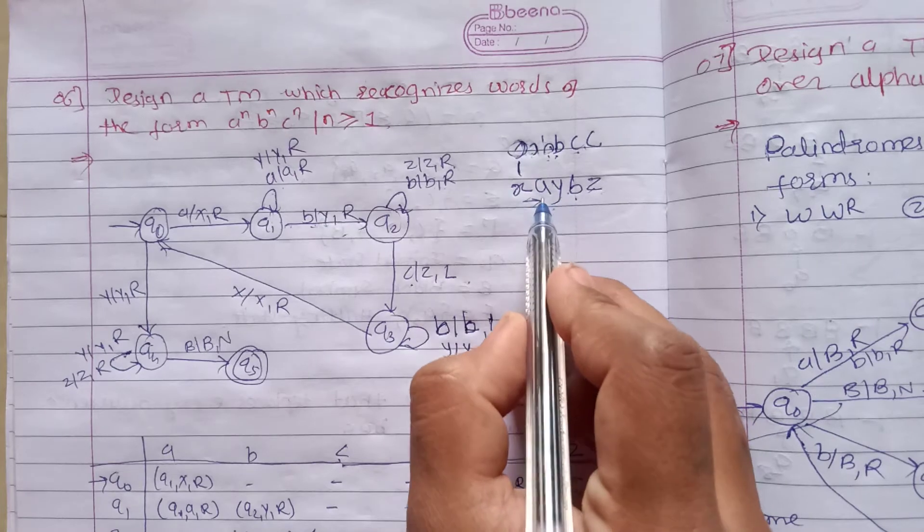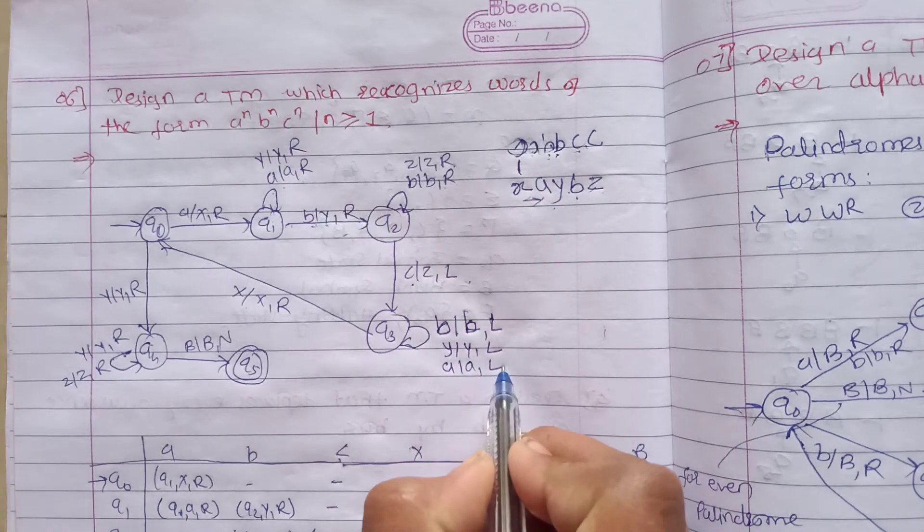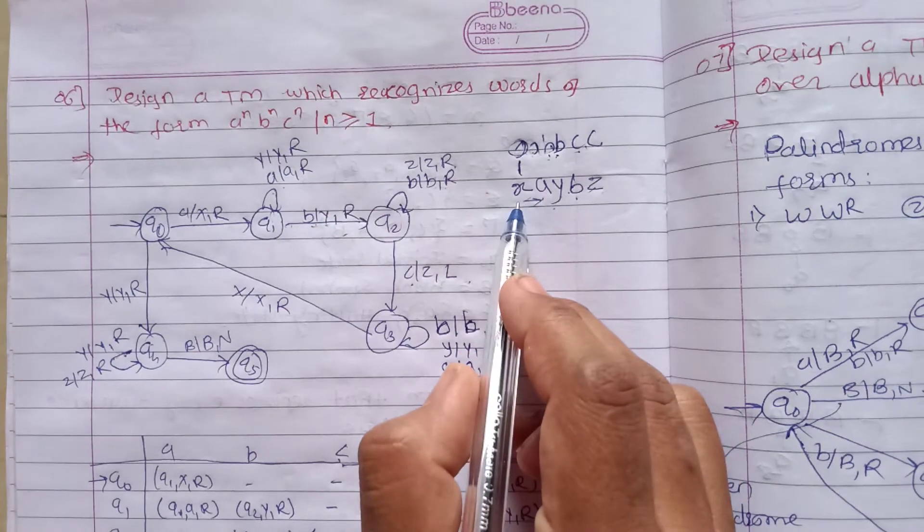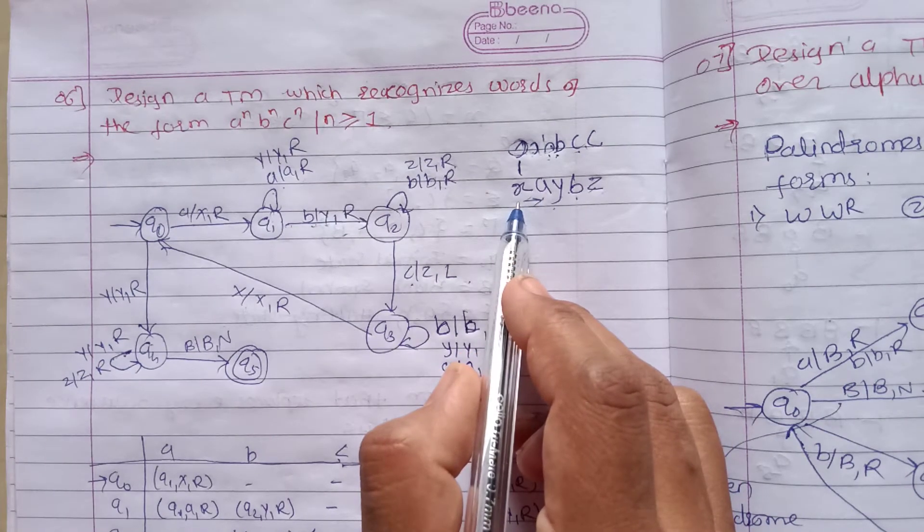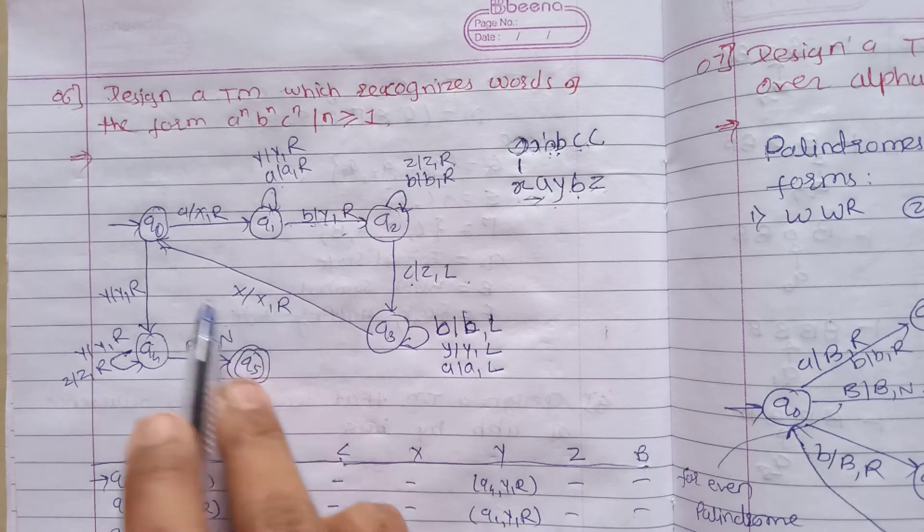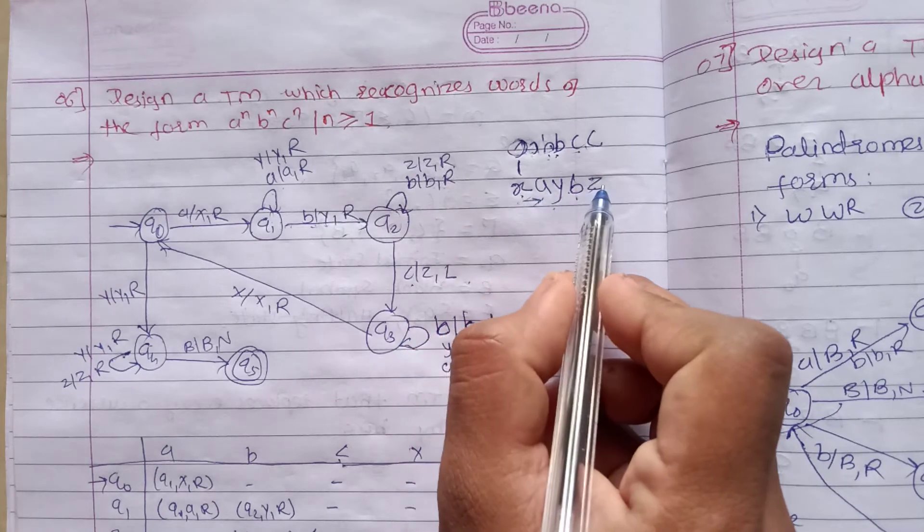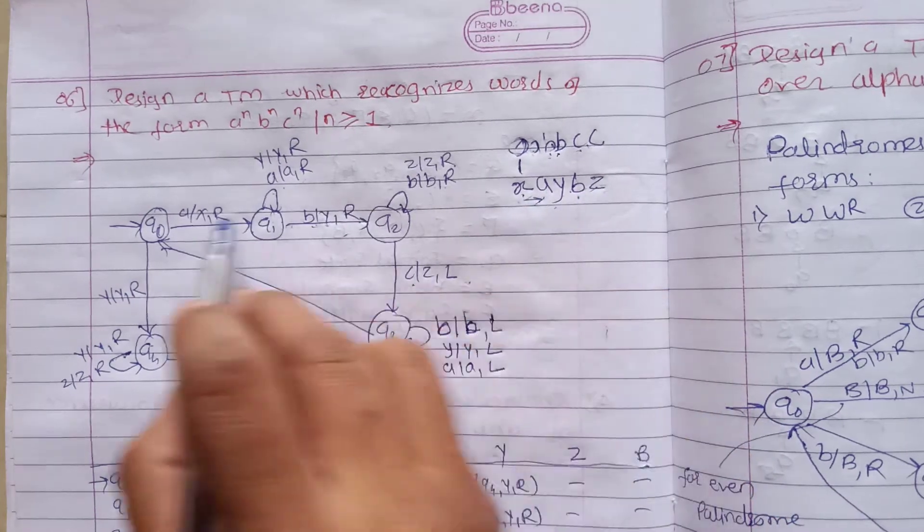Then we get a, so a will be replaced with a, movement left. After that we get x. As soon as we get x, x will be replaced with x, movement right. Then the same procedure follows.